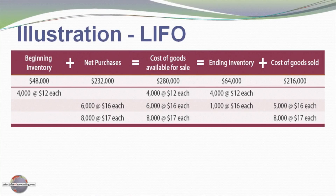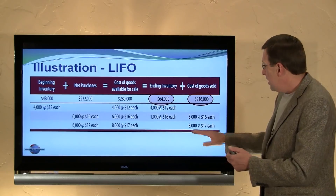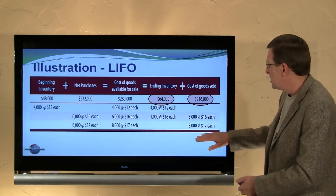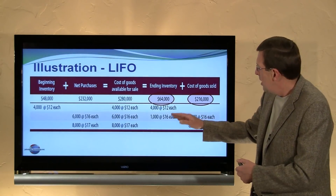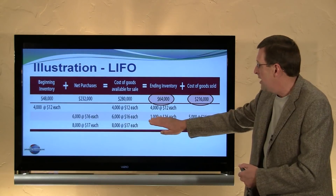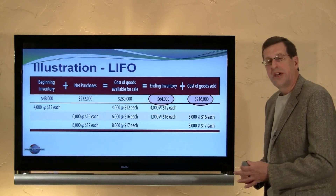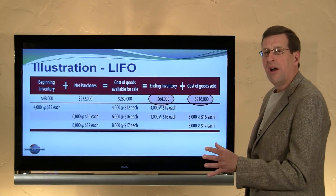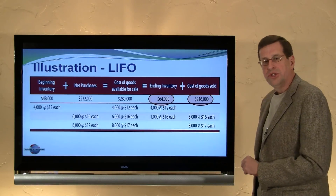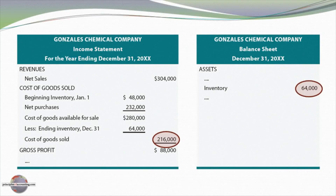Under LIFO, we have the same beginning inventory, the same purchases, and the same goods available for sale. The difference is that we assign $64,000 to ending inventory and $216,000 to cost of goods sold. Last in, first out — the last 8,000 purchases are assigned to cost of goods sold, and 5,000 before that is also assigned to cost of goods sold. The 5,000 units in ending inventory consist of 1,000 at $16 and 4,000 at $12, totaling a much lower ending inventory of $64,000 — the older, cheaper costs. On the balance sheet we'll have $64,000 inventory, and on the income statement, $216,000 in cost of goods sold.